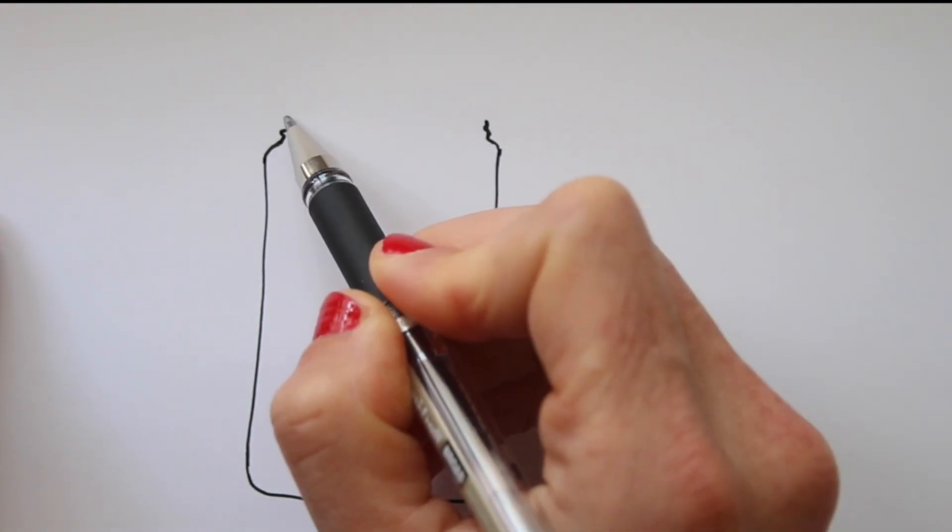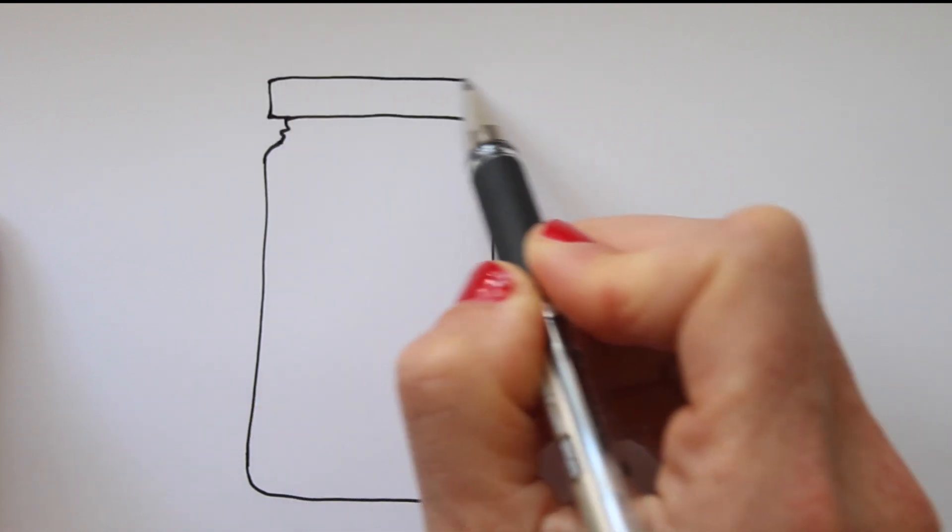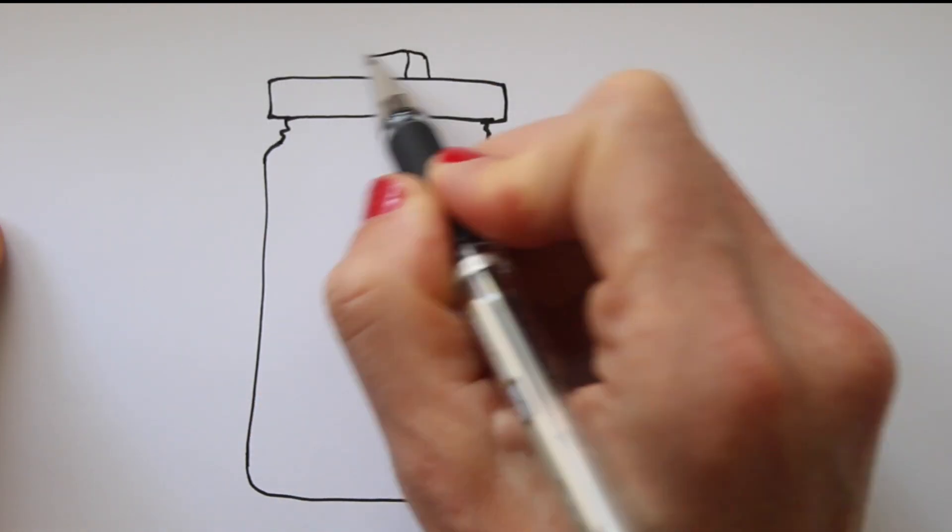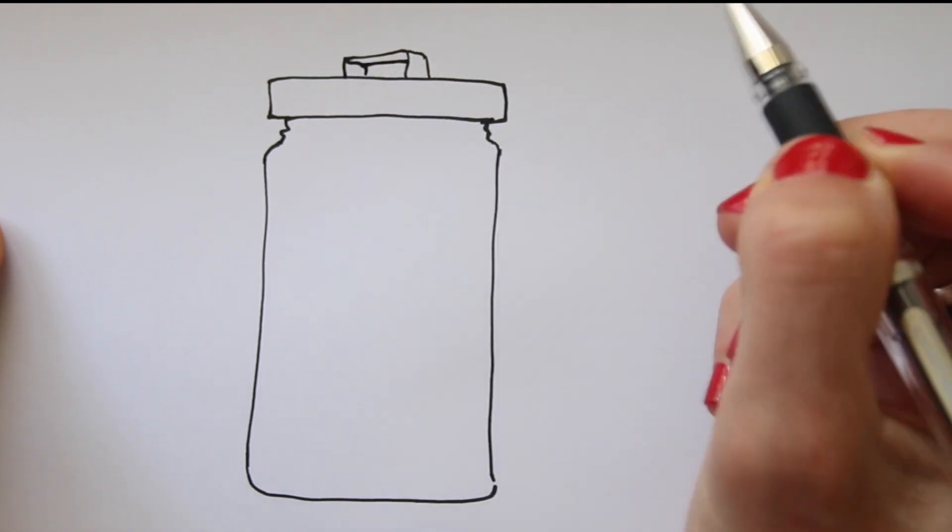I start with the outlines, and then I look at my subject to find the shaded areas. Squinting your eyes can help to see them better.